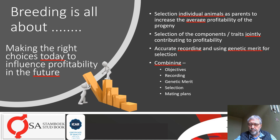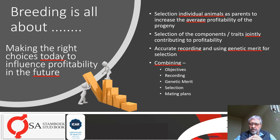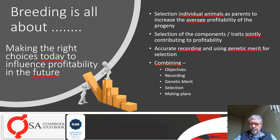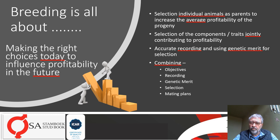Then mating plans as well. You have to decide what bulls should be in AI programs, what bulls should be mated to what cows, and also retain genetic diversity — meaning you don't want to push up inbreeding too much by breeding too heavily from the progeny of those matings.